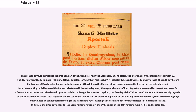Although there were exceptions, the first day of the bis-sextum — February 24th — was usually regarded as the intercalated or bisextile day since the 3rd century AD. February 29th came to be regarded as the leap day when the Roman system of numbering days was replaced by sequential numbering in the late Middle Ages, although this has only been formally enacted in Sweden and Finland. In Britain, the extra day added to leap years remains notionally the 24th, although the 29th remains more visible on the calendar.